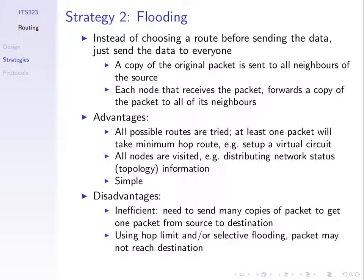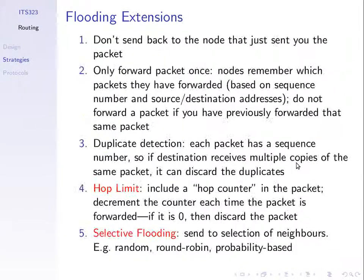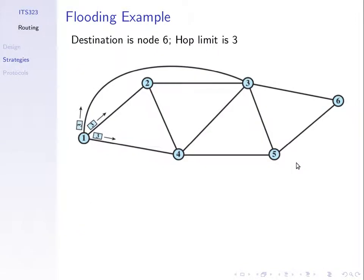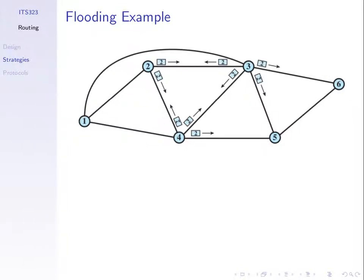But flooding is very inefficient. To get one data packet from node one to node six in our example, we needed to send many packets through the network. Node one sends three packets — that's three so far. Then nodes two, three, and four send another four plus two plus three — nine more packets, so twelve transmitted in the network so far.